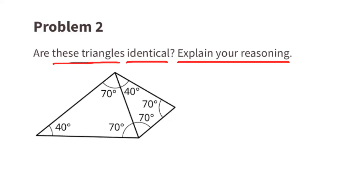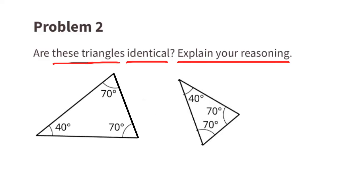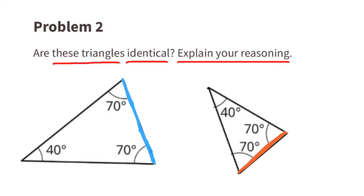Let's separate these two triangles so we can compare them better. It's obvious that these two triangles are different sizes, and that makes a difference. The side lengths on the triangle on the left are longer than the side lengths of the triangle on the right, so these triangles are not identical.